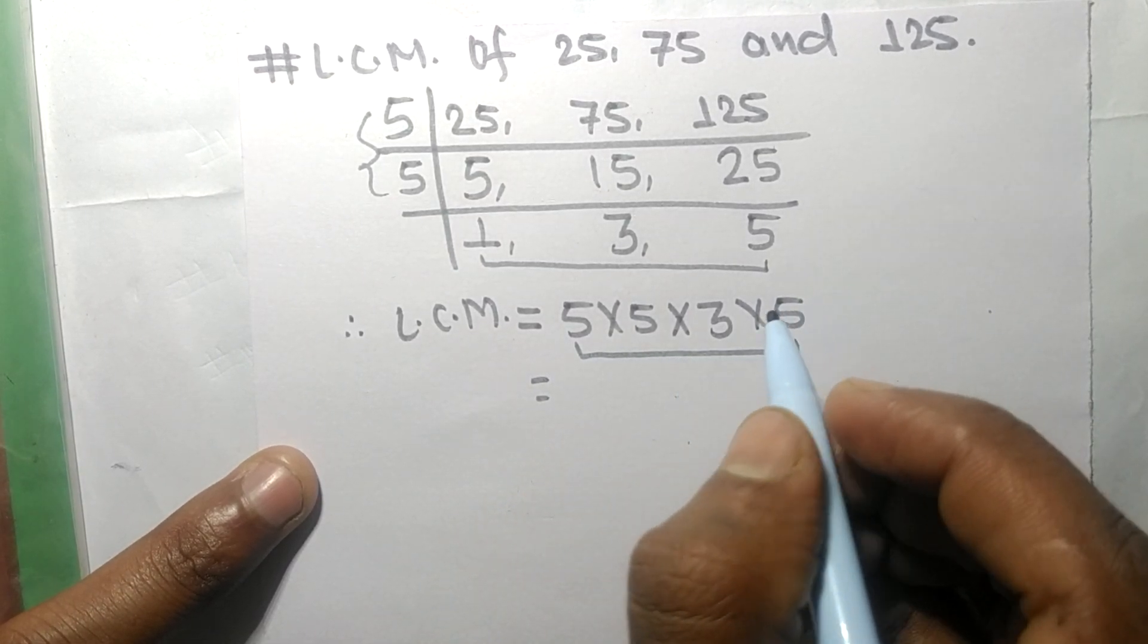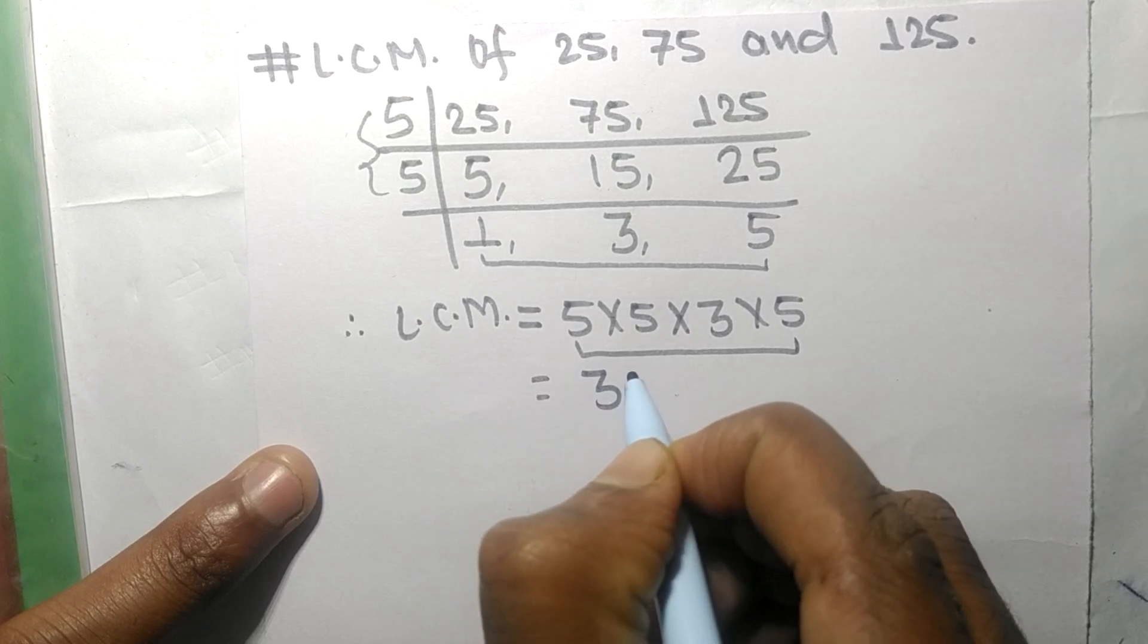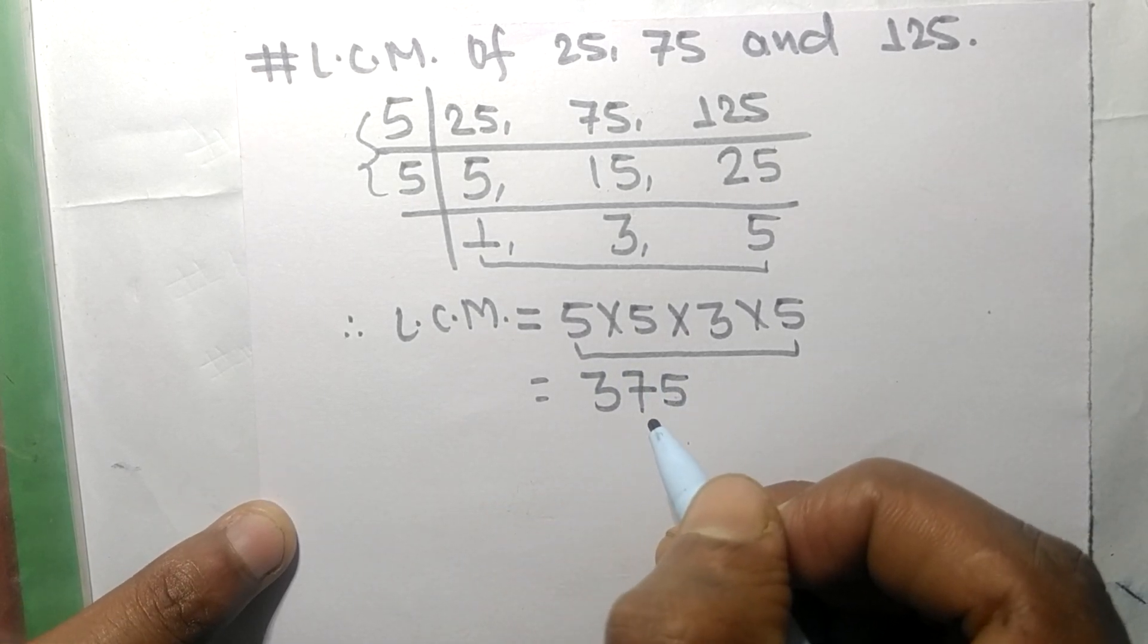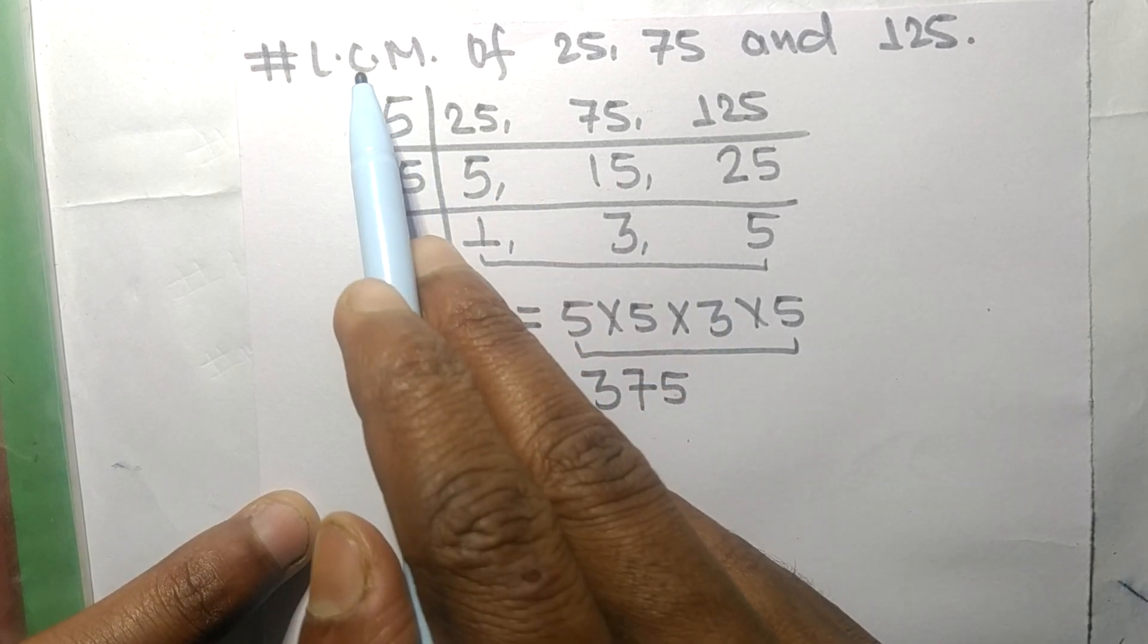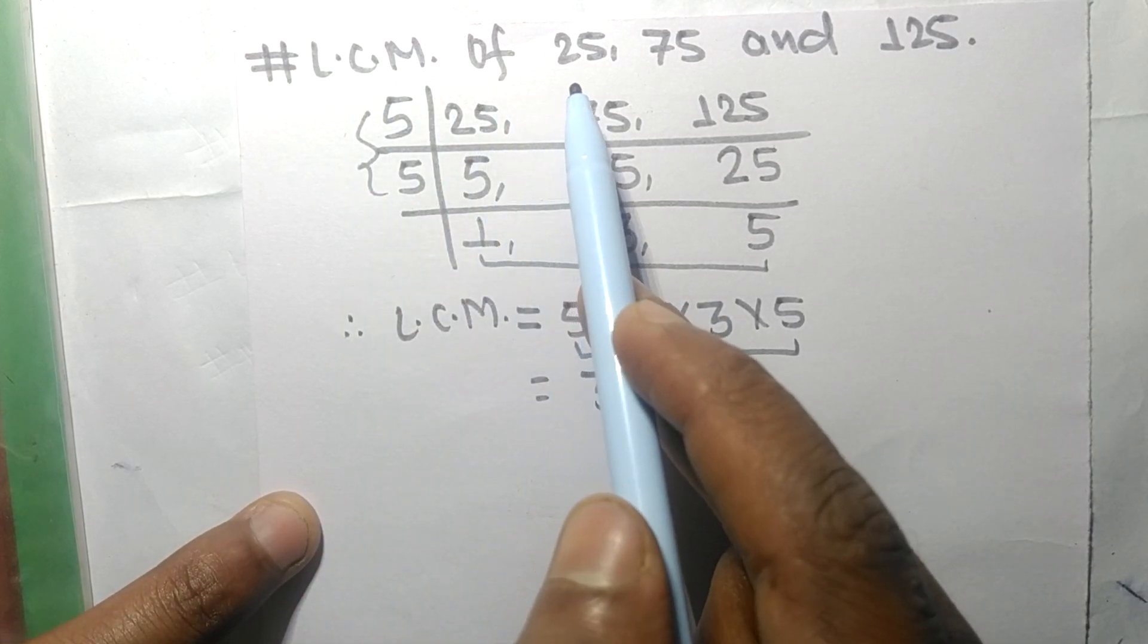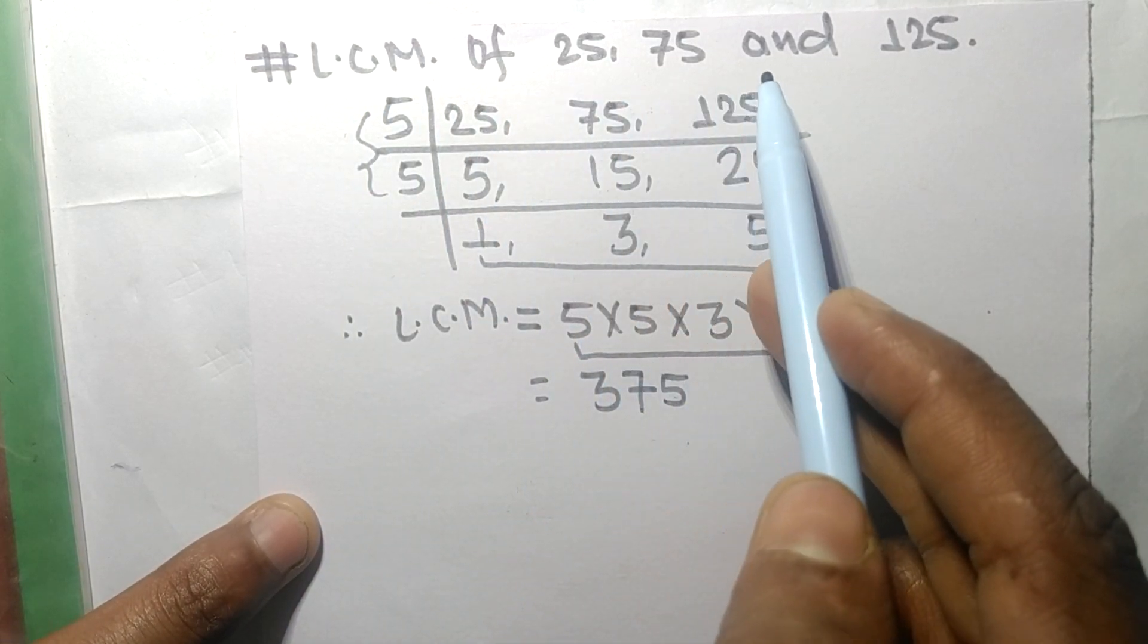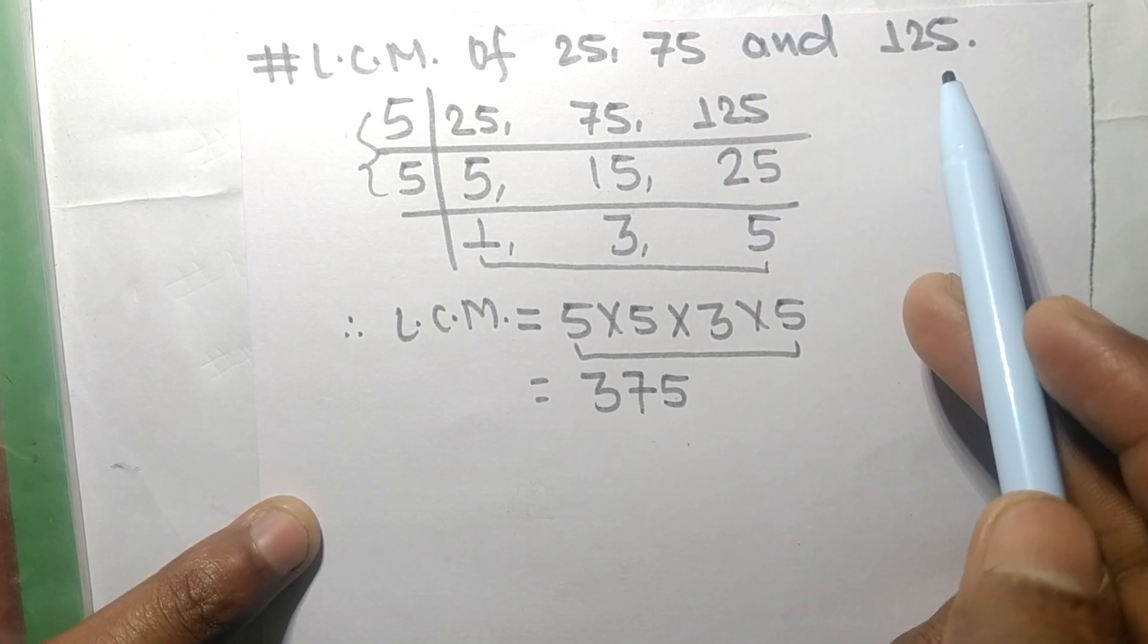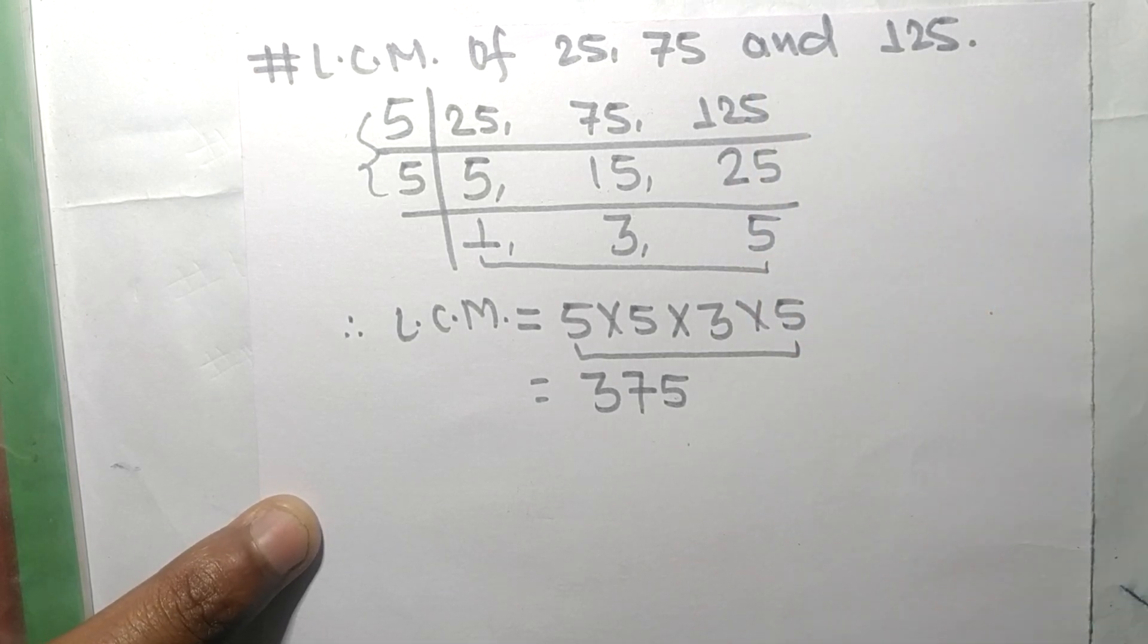By multiplying all these numbers we get 375. So 375 is the LCM of 25, 75, and 125. So this much for today and thanks for watching.